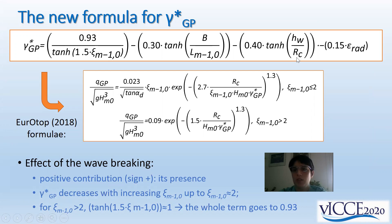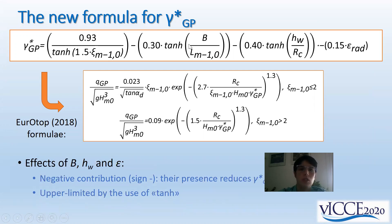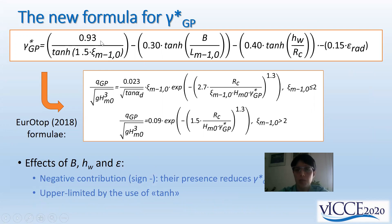The gamma star GP formula includes several terms, each accounting for a different contribution: the contribution for the wave breaking, the contribution for the berm or promenade, the contribution of the wall height, and the sloping part. Each of these contributions directly goes to zero when that particular element is not included, meaning the formula can be directly applied to each structure combination independently of the presence or absence of the berm, the wall, etc.